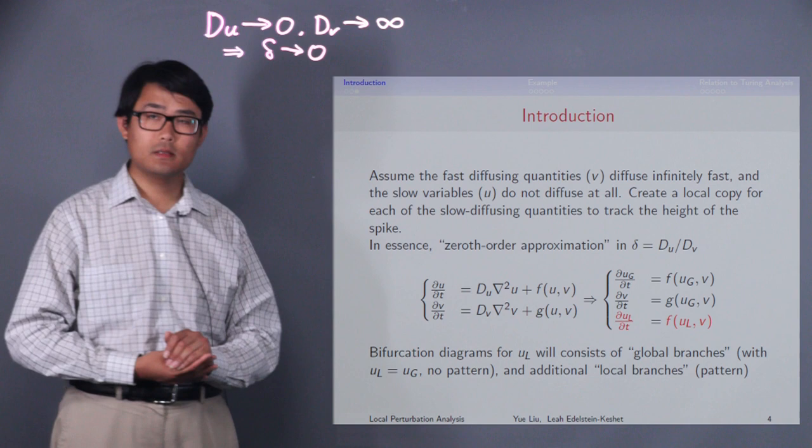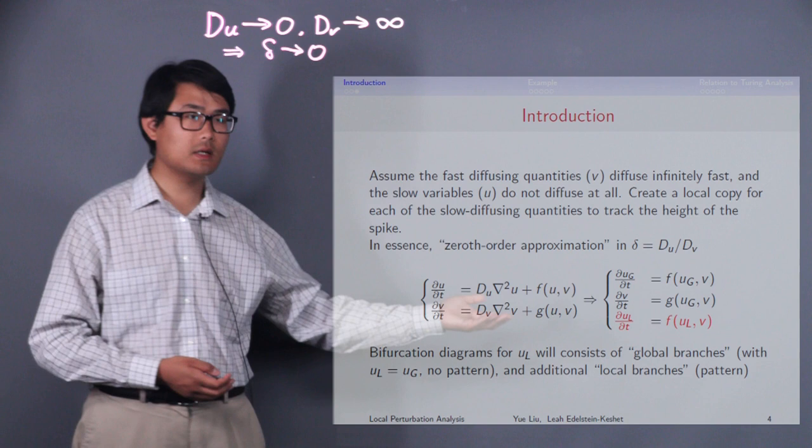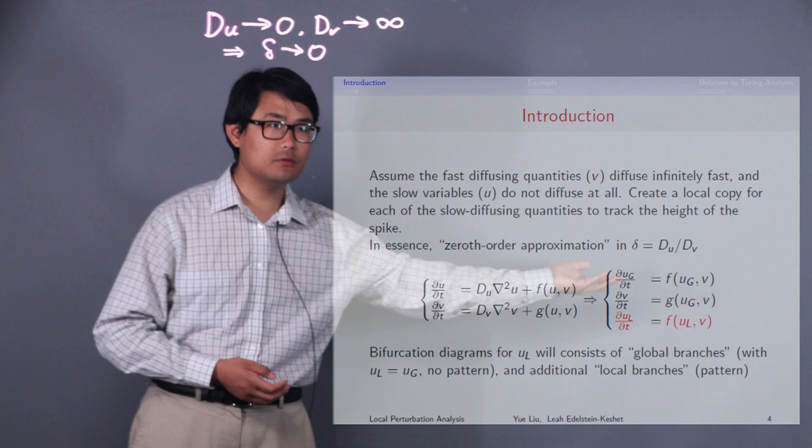Next, for the slow diffusing variable u, since the global quantity is spatially homogeneous, we can also get rid of the diffusion term and represent it with another OD variable, ug.